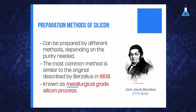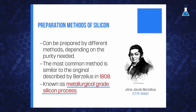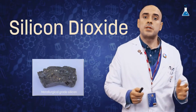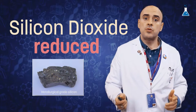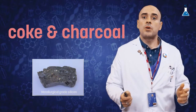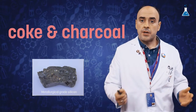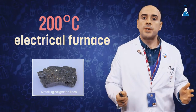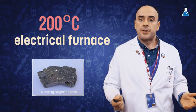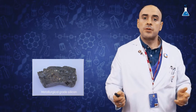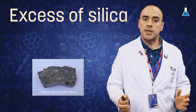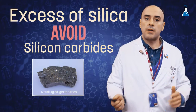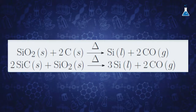This method, which is called the metallurgical grade silicon process, consists of a metallurgical procedure in which silicon dioxide is reduced by heating it with coke and charcoal at over 2000 degrees Celsius in an electrical furnace. It is important to have an excess of silica in order to avoid the accumulation of silicon carbides, as shown in the following equation.